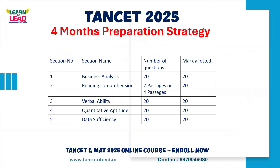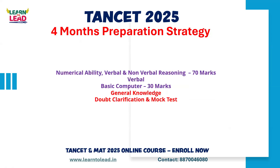In the verbal part, you can score 60% of the marks. For quantitative and data sufficiency sections, you can score 40% of the marks each. In total, you have 100 questions, and you have a time allotted of 2 hours.